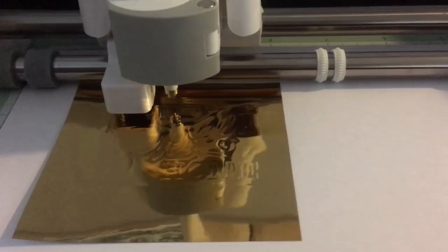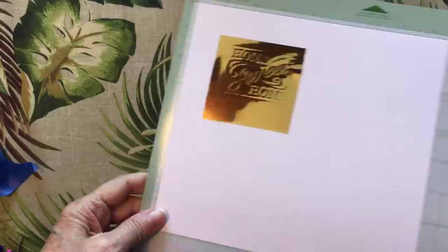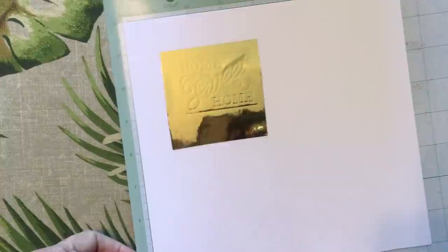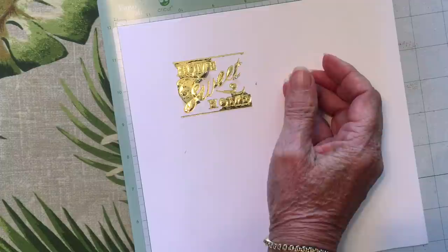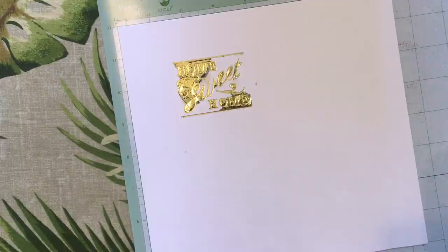Once the machine is finished, and since we are only foiling this time, we can eject the mat. Carefully lift a corner to remove the original foil piece. Okay, so the initial reveal is disappointing, but hang on, because we've got one more step to go.